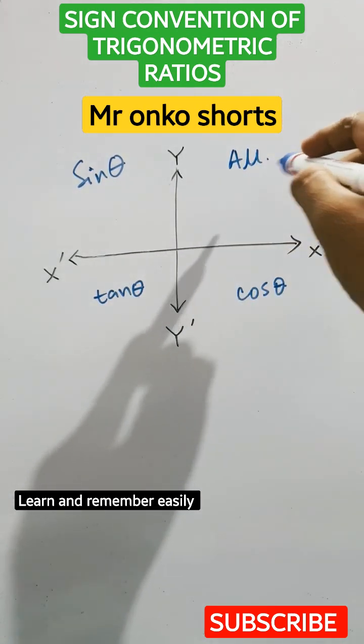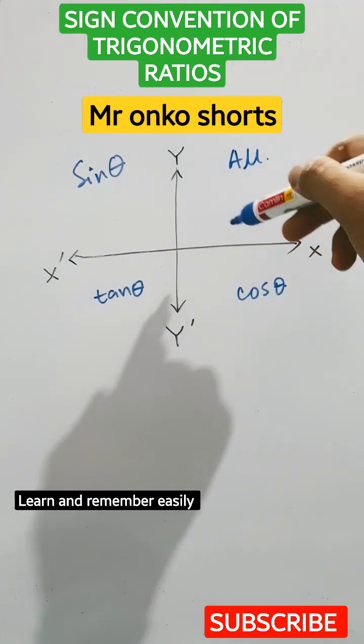So, first of all, take a look in the first quadrant. That is, all of the trigonometric ratios including their reciprocals are positive.